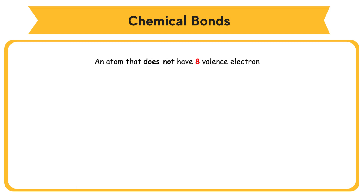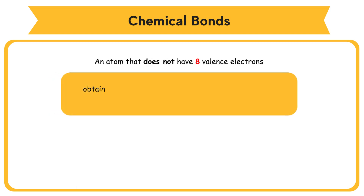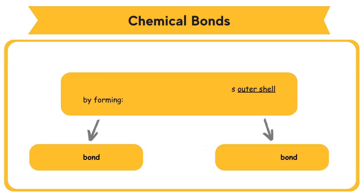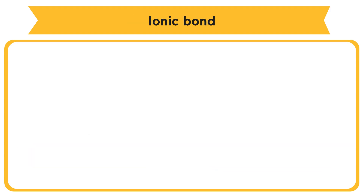An atom that does not have eight valence electrons can obtain an octet electron arrangement by forming either an ionic bond or a covalent bond.